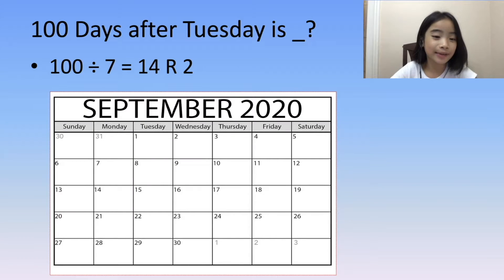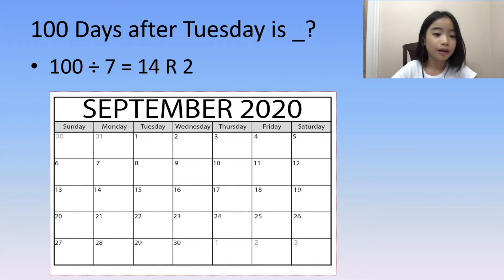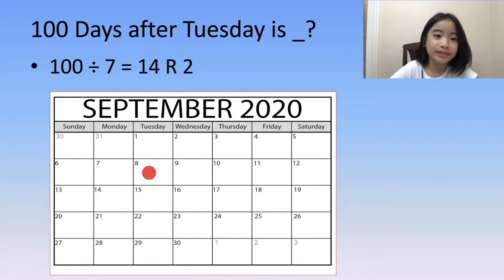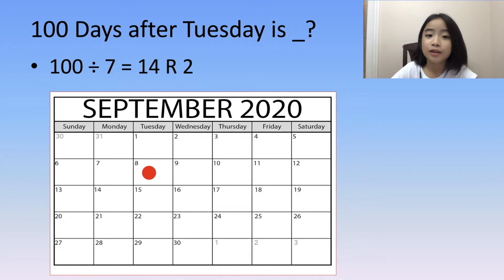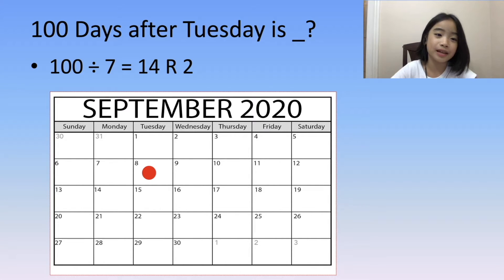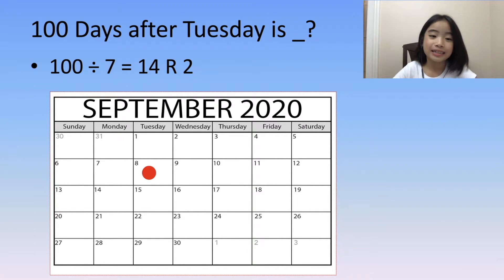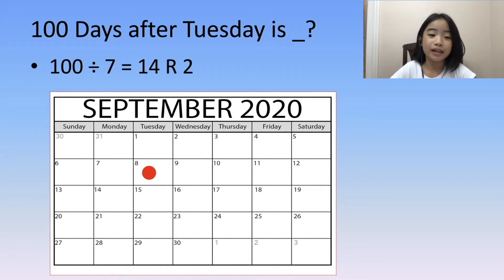So back to our calendar, we use September 8th as our Tuesday. The quotient 14 means 14 seven-day weeks. And again, it's still Tuesday, but in another month.